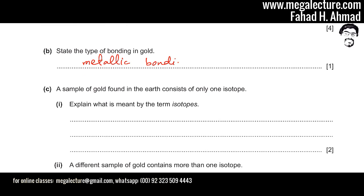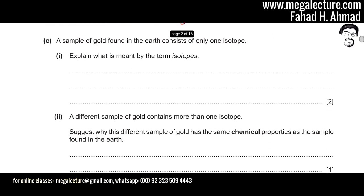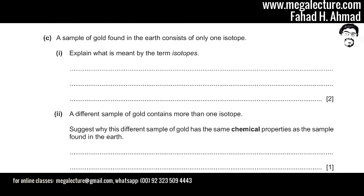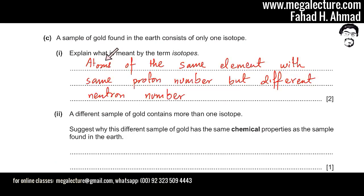Gold forms a giant metallic lattice with free-moving electrons. Moving to the next part: a sample of gold found in the earth consists of only one isotope. Isotopes are defined as atoms of the same element with the same number of protons but a different number of neutrons. The proton number stays exactly the same, while the neutrons can vary.